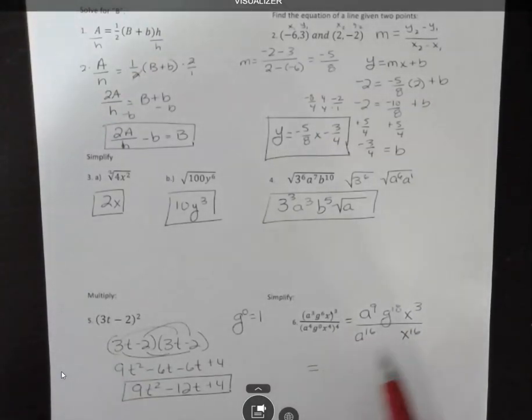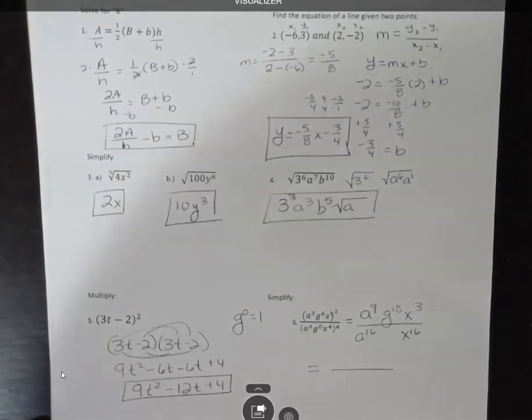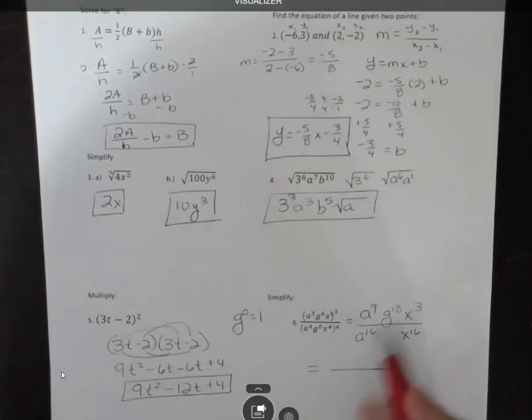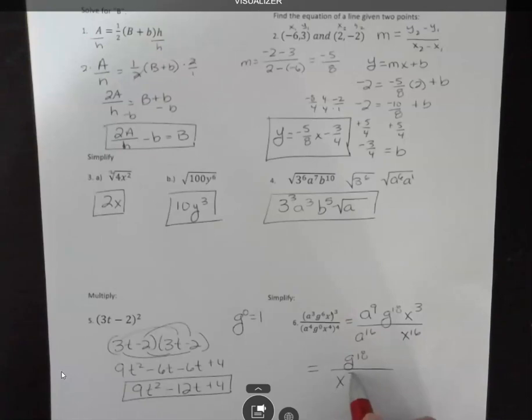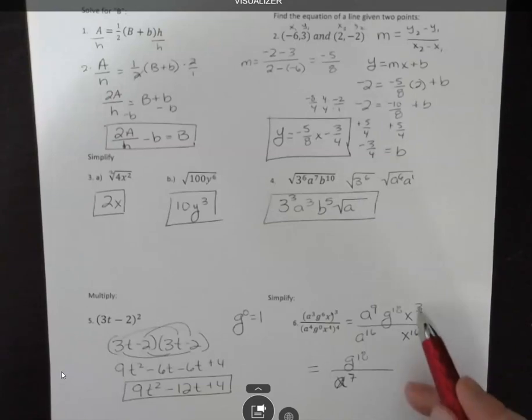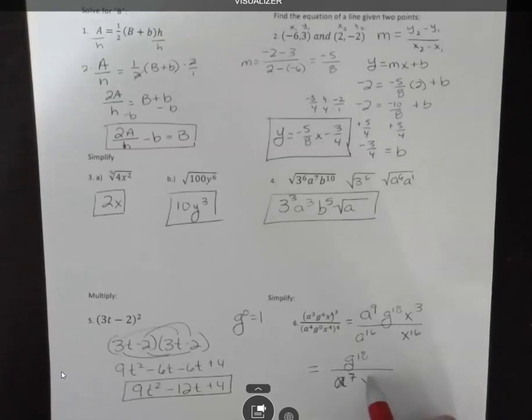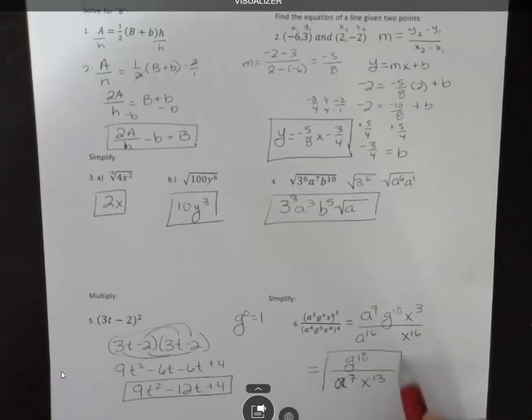Now I'm going to simplify this. Where do I have more a's? I have more a's on the bottom. By how many? Seven. I know that I have more g's on the top because I only have g's on the top. So I have g to the eighteenth on the top, but here I have seven more a's. And for x's, I have thirteen more x's. Sixteen minus three is thirteen. And those x's are, there's more in the denominator, so that's where they would be when I was done.